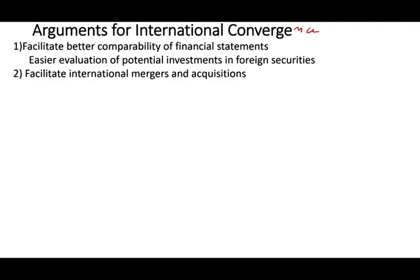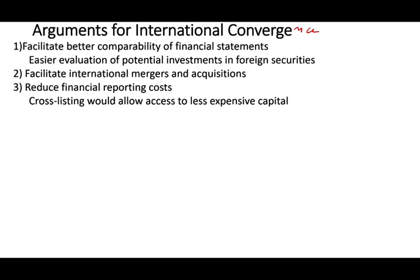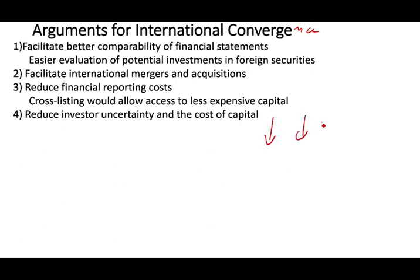Convergence also facilitates international mergers and acquisitions — without the same financial statement system, every time you buy an international company you have to translate statements and do more diligence. It benefits large companies. It also reduces financial reporting costs: with one system you can use it for cross-listing in New York, Tokyo, and London. Cross-listing allows access to less expensive capital because there is less risk. It reduces investor uncertainty and the cost of capital — the less uncertainty, the less the risk, and the lower the cost because investors understand what you're communicating in your income statement, balance sheet, and cash flow statement.